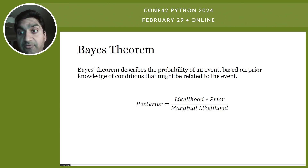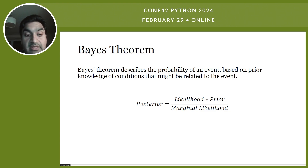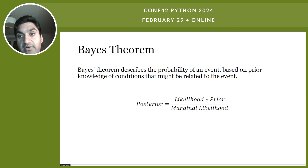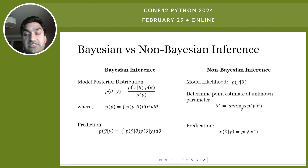Bayes' theorem is a simple but powerful equation. We start with the prior belief — the prior distribution for the unknown parameter. The likelihood represents new information, and the posterior represents our updated belief about the unknown parameter, incorporating both prior knowledge and observed evidence. The term in the denominator, the marginal likelihood, is a normalizing constant ensuring that the posterior also represents a valid probability distribution.